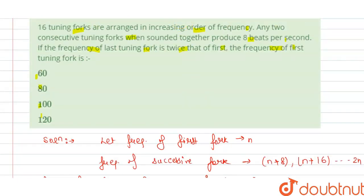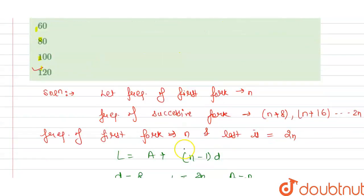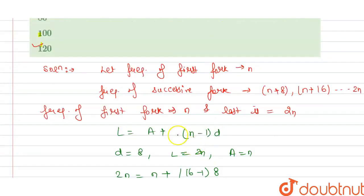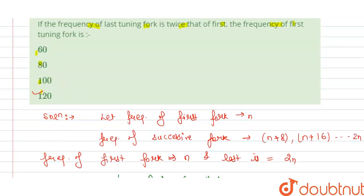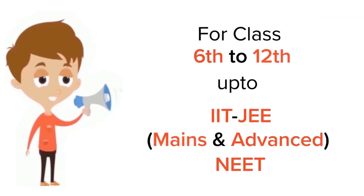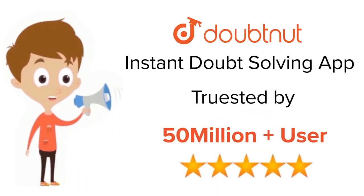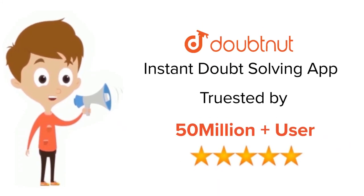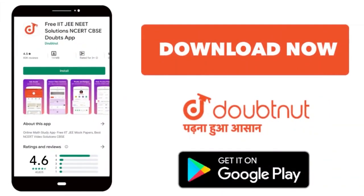We check which option is correct: the frequency of the first tuning fork is 120, so option D is correct. Thank you. For class 6 to 12, IIT JEE, and NEET level, trusted by more than 5 crore students — download the DoubtNut app today.